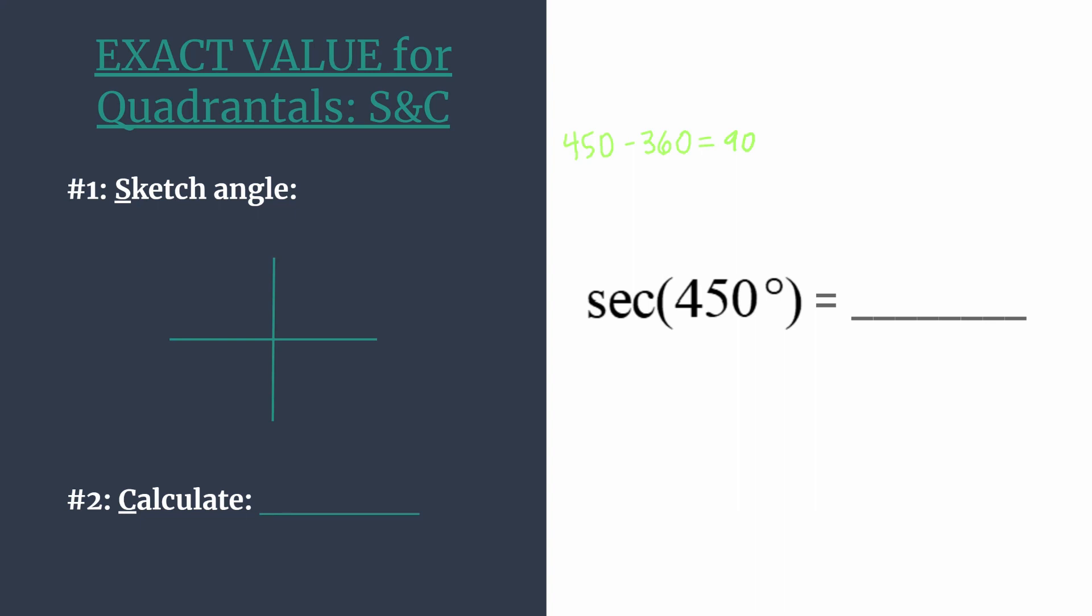Now we can go to sketch. Sketching 90 is very easy. Here's zero, a quarter rotation is 90 degrees. So here's our terminal side for both 90 degrees and the angle in consideration, 450 degrees. If we were sketching that, we would just draw an extra rotation, but all we want here is the terminal side graph.